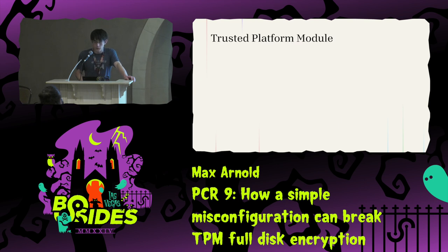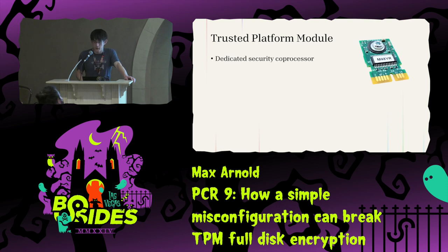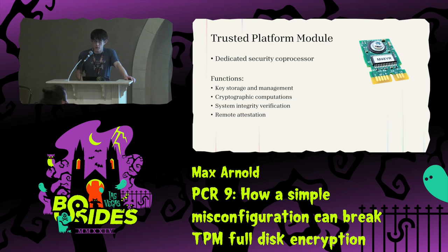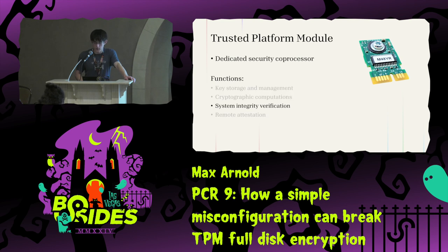The second area of knowledge we need is the Trusted Platform Module. You may have heard of this — there was some noise about it with Windows 11 requirements. It's a standard for a dedicated security coprocessor. The TPM has a number of features, but we'll only talk about a few. It can do key storage and management — holding encryption keys securely on the device and determining whether to return them to the user. It can do cryptographic computations like symmetric and asymmetric encryption as well as hash functions. It can do system integrity verification, where it determines the state of your machine by looking at the boot process. And it can do remote attestation, though we won't cover that here. The system integrity verification feature is somewhat unusual, so I'll go into more detail on exactly how that works.